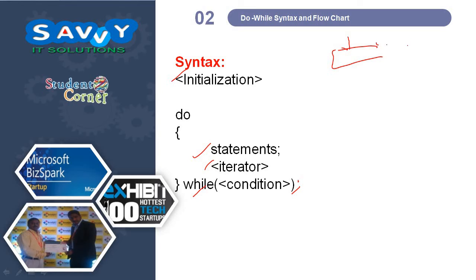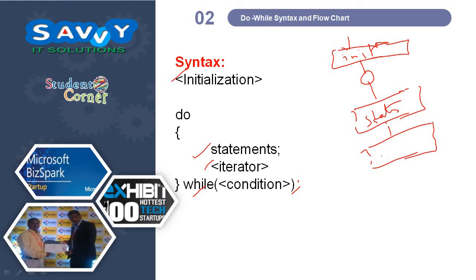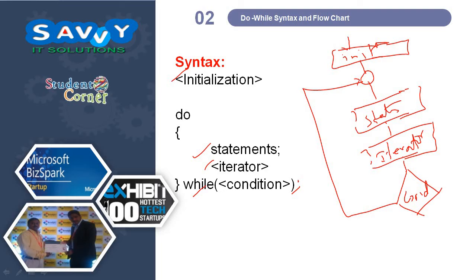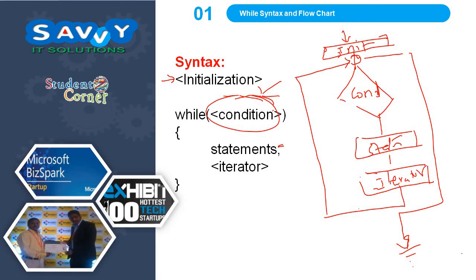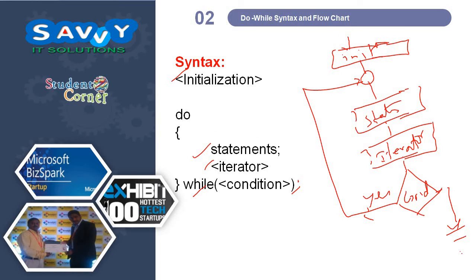The flowchart for do-while is: initialization, then statements, then iterator, and then the while condition. If the condition is true it loops back; if no, it exits. In do-while, at least once the statements are executed. If the condition fails, at least once the statements are still executed — that is the key point of do-while.